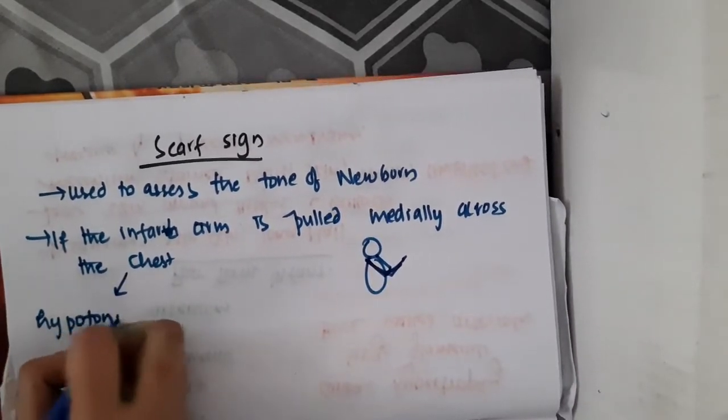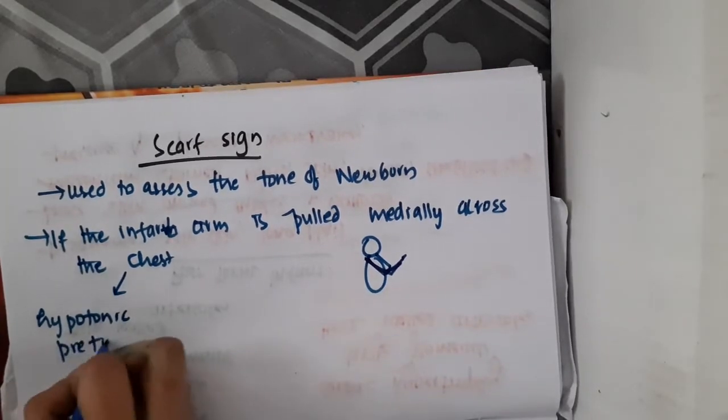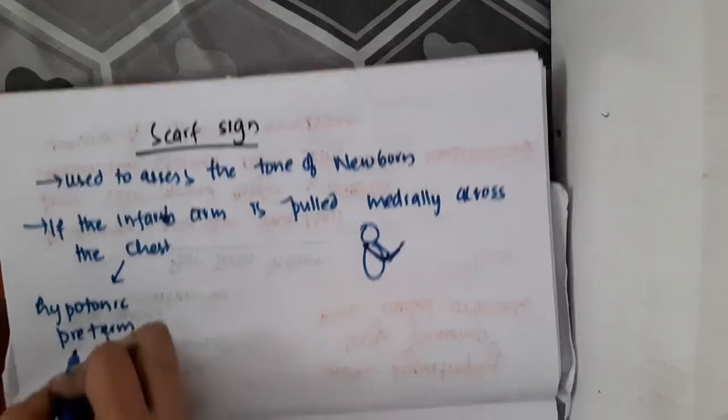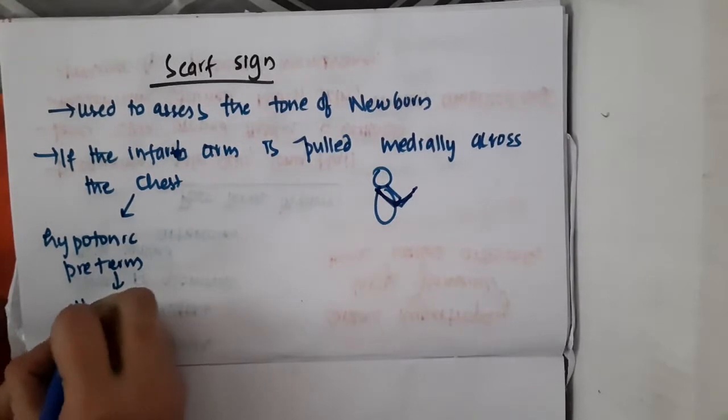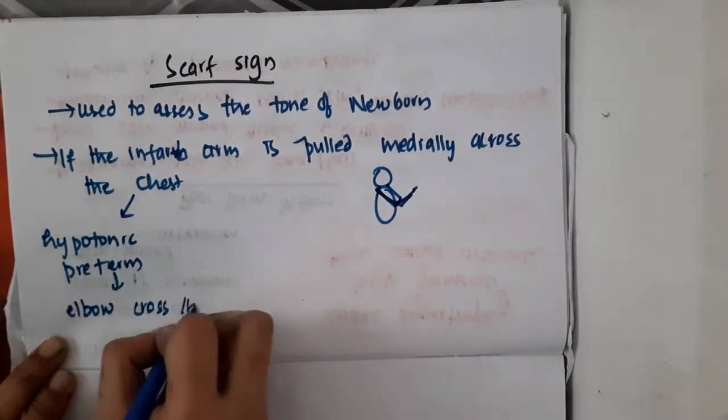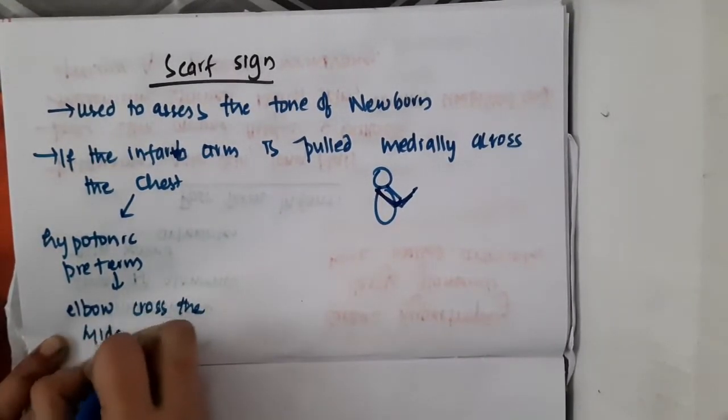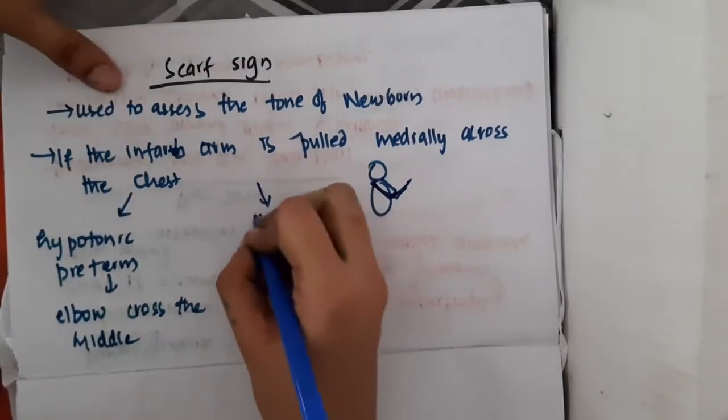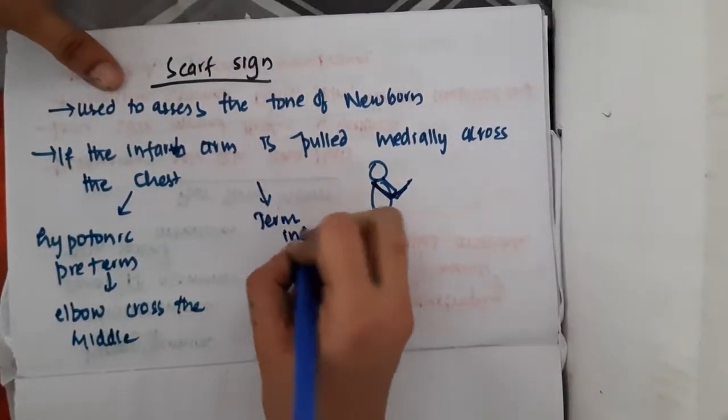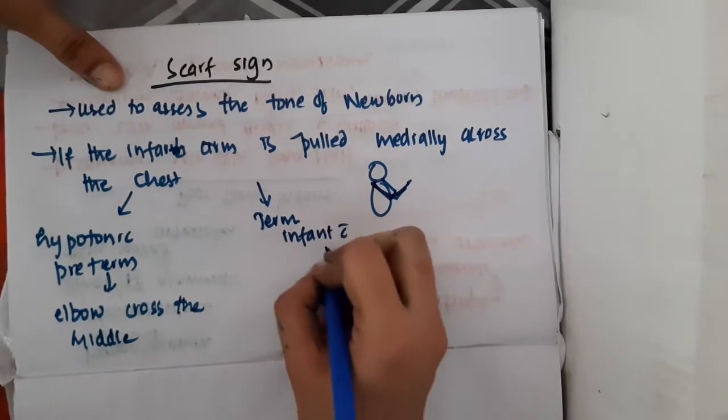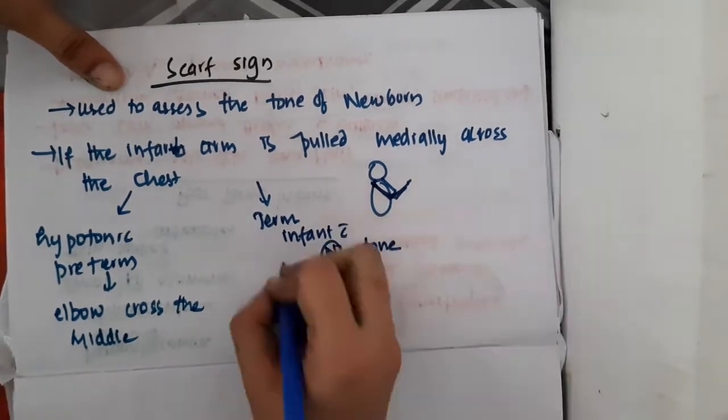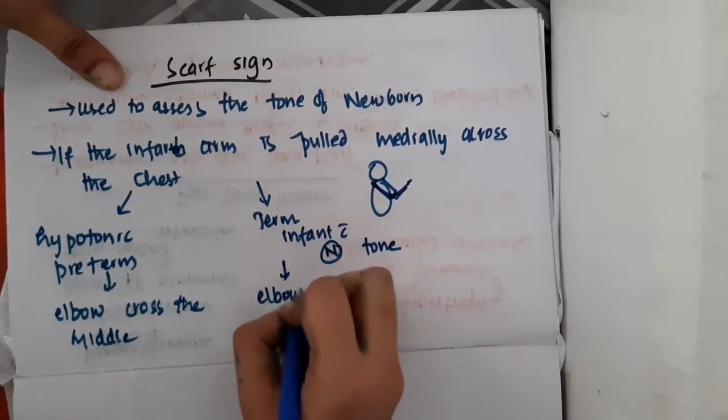hypotonic preterm, you will see that the elbow easily crosses the midline. If the baby is a term infant with normal tone, then the elbow does not cross the midline.